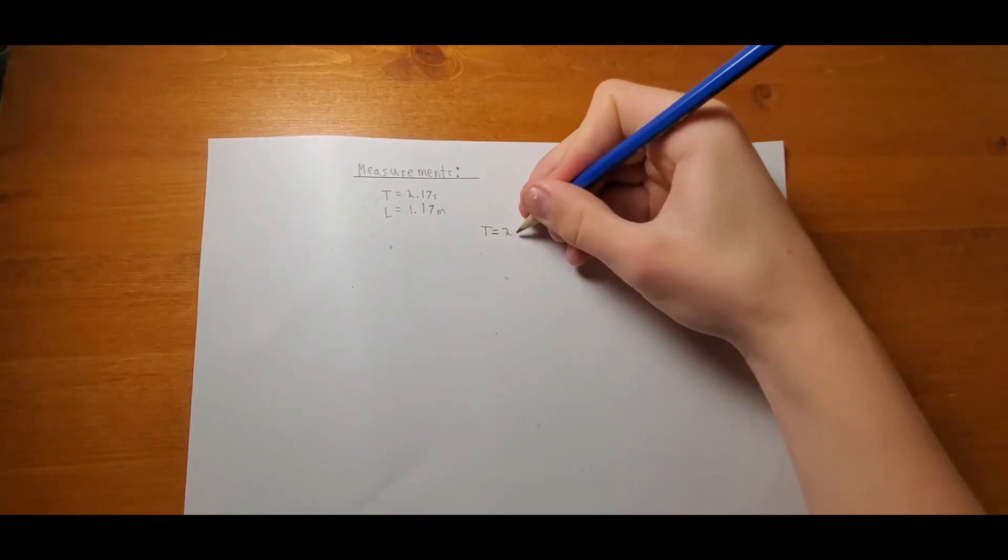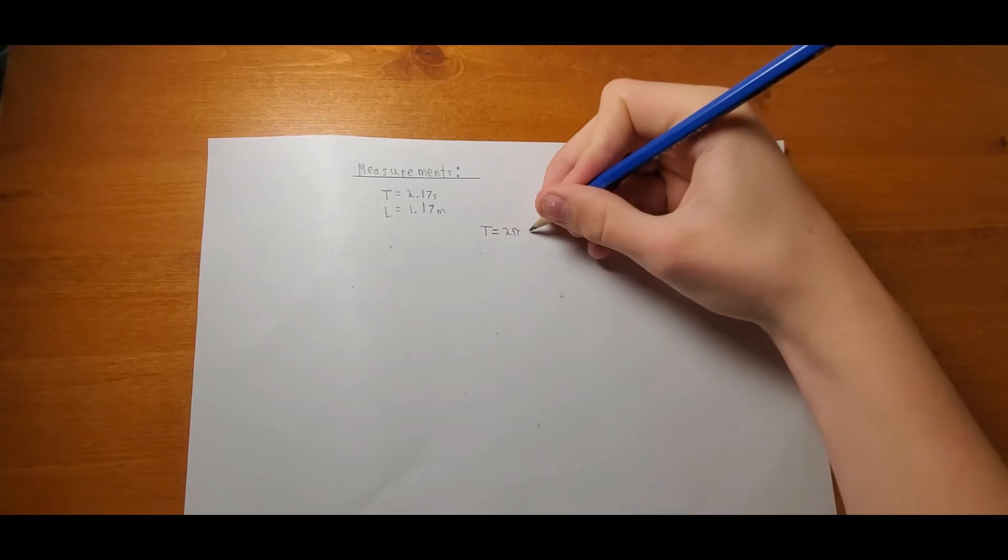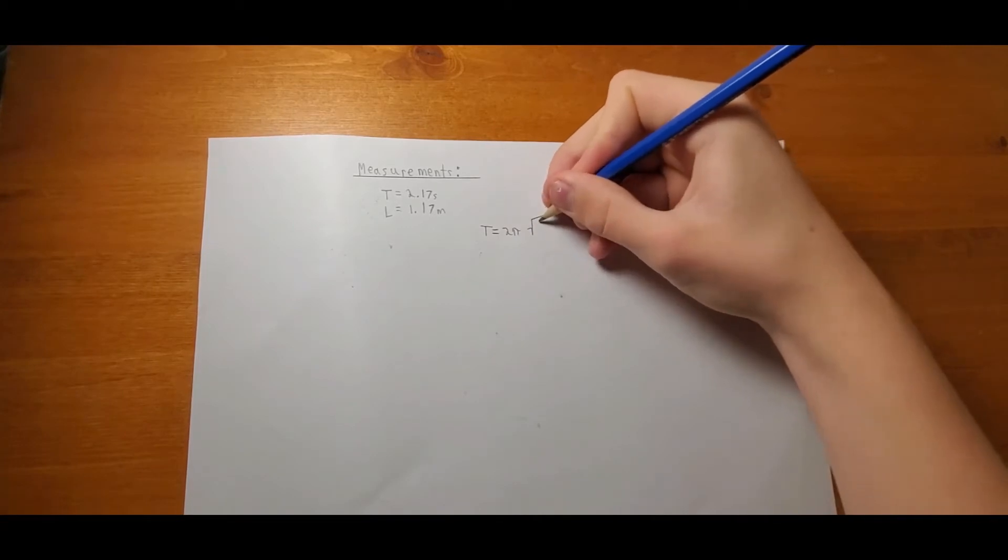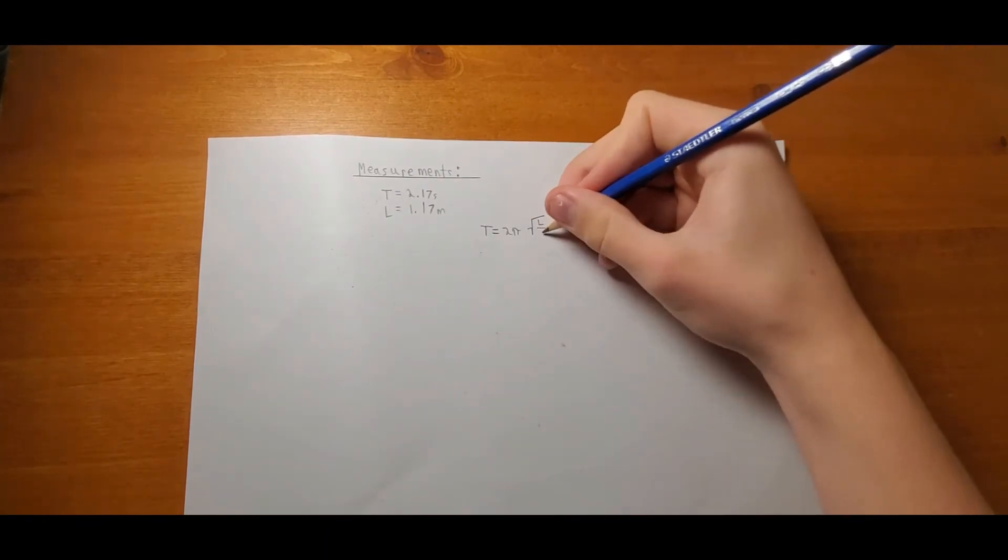And that is equal to 2 times our happy little friend pi times the square root of the length of the pendulum, which we have right here, divided by gravity.